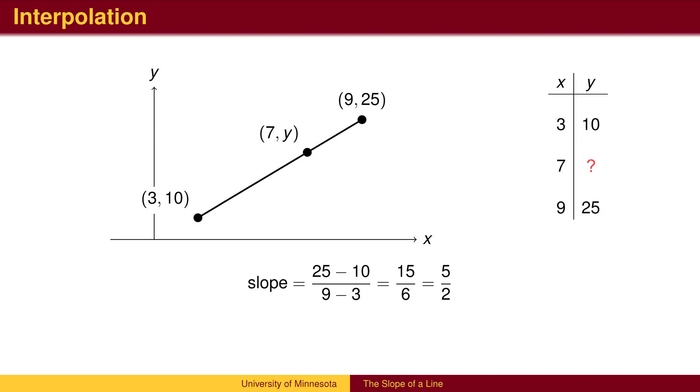Given the slope of a line, we can solve several types of problems. The first is called interpolation, finding a y value corresponding to an x value between two points.